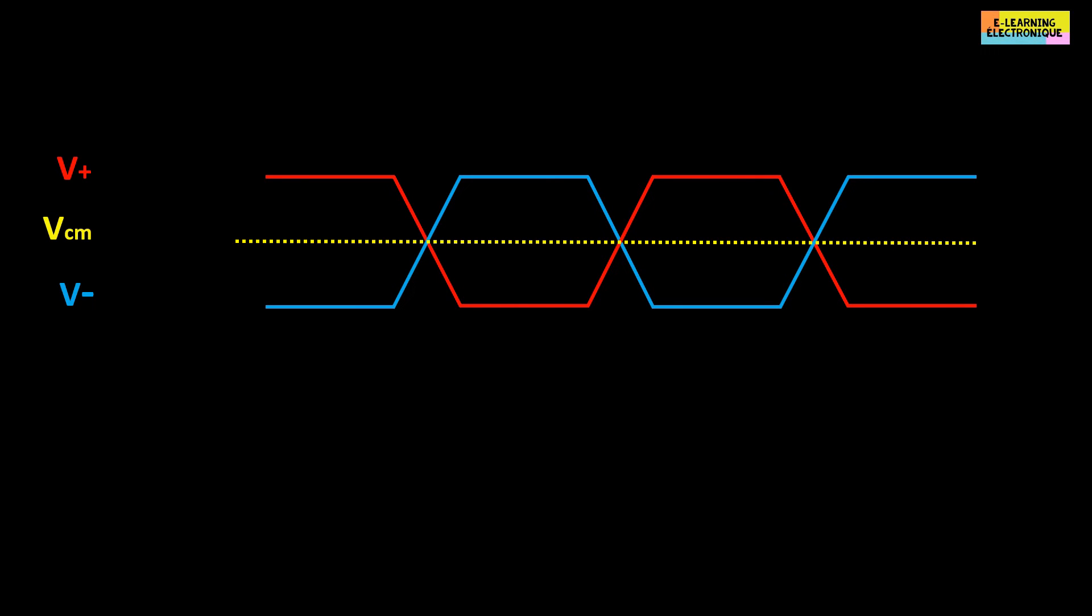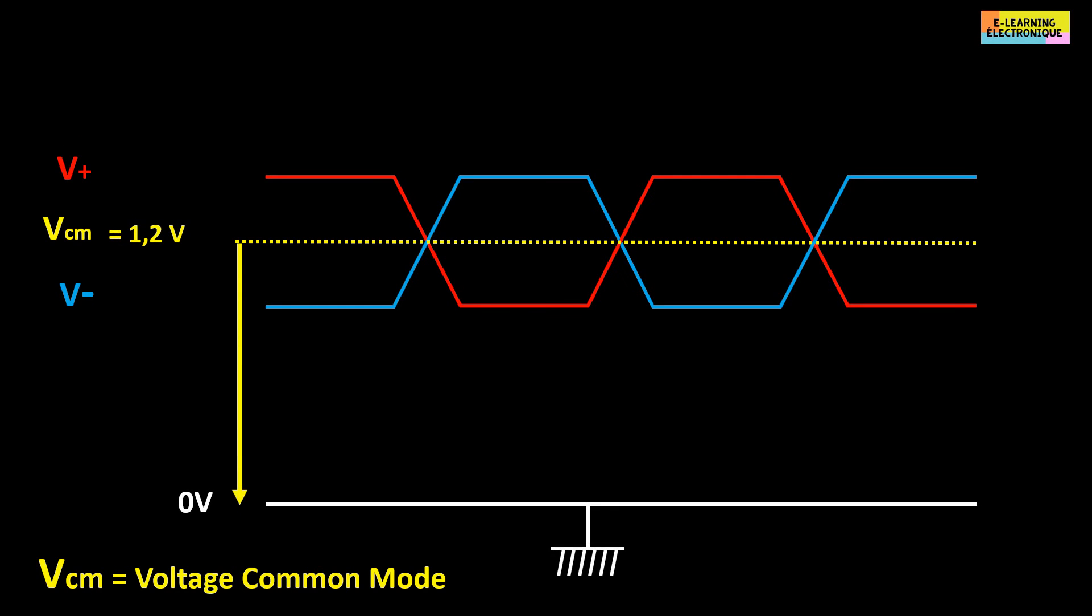At the transmitter level, in addition to the voltages V+ and V-, there is another voltage which will be used as a reference for these two voltages. This voltage is noted VCM for voltage common mode. This voltage will be halfway between V+ and V-. The voltage VCM is equivalent to 1.2 volts with respect to the ground. We saw previously that the potential difference between the two lines V+ and V- was 350 millivolts. This voltage is noted here VOD which is an abbreviation of voltage output differential.